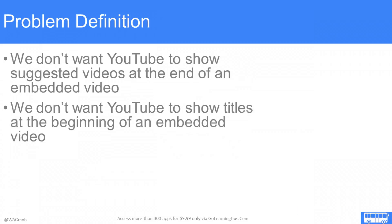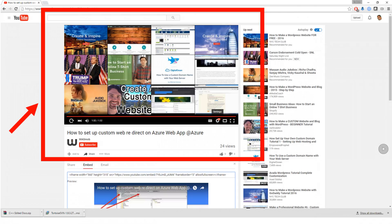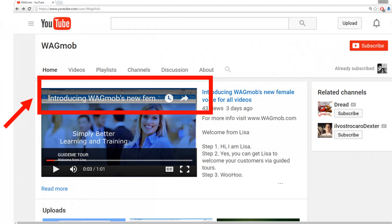Let's first understand our problem. We don't want YouTube to show suggested videos at the end of an embedded video, and we don't want YouTube to show titles at the beginning of an embedded video. Do you see the problem? This is what we don't want — we simply don't want to show related videos. Say no to titles.